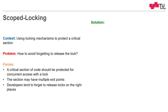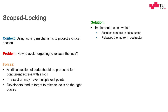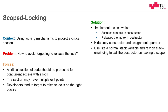The solution is to implement a class which acquires a mutex in the constructor — it locks it there — and releases the mutex in the destructor — it unlocks it there. We also want to hide the copy constructor and assignment operator, similar to the auto pointer or unique pointer, so that no one can copy our scoped lock. We use this variable like a normal stack variable and rely on the compiler to call the destructor as soon as we leave the scope and the stack is unwound.